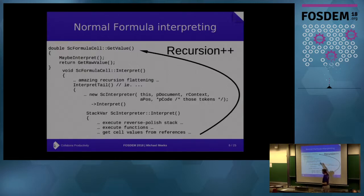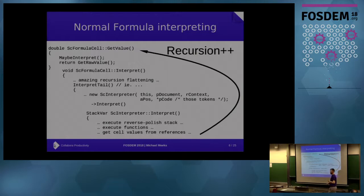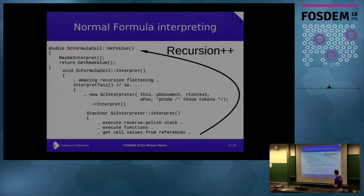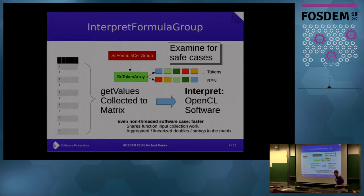Sometimes we recurse back up and find another cell that needs calculation. Imagine a case where you type 42 in A1, then type =A1 in A2, and fill all the way down so you have a million formulae each referring to the one above. If you call get_value on the very bottom cell, this can recurse a million levels deep. There's a 'recursion-flattening' mechanism that detects deep recursion, defers work creatively, and completes later - it's a bit irritating but necessary.